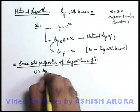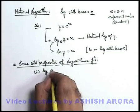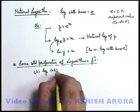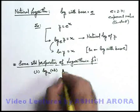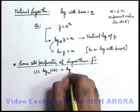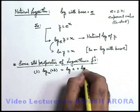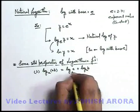If you're given with log of two quantities having in product form, like log of a into b having a base x, this can be written as log a plus log b having same base x.